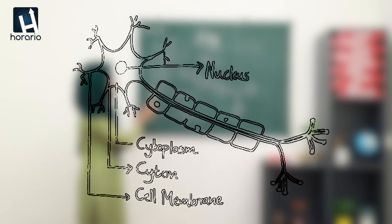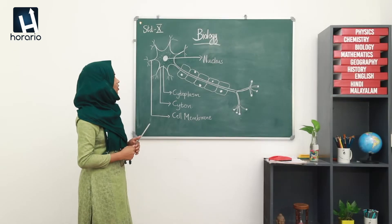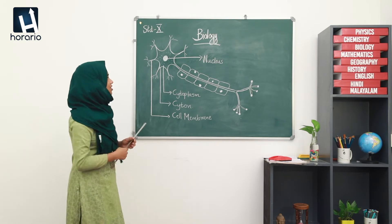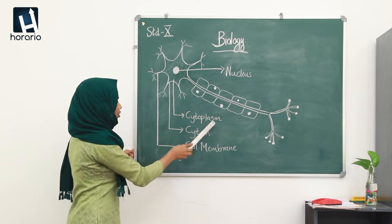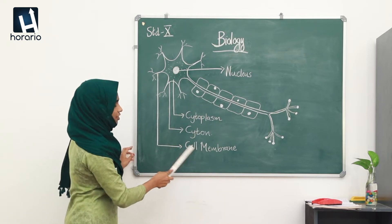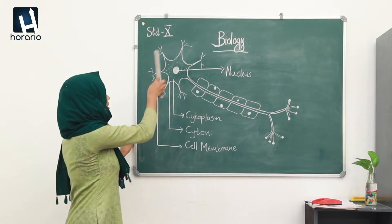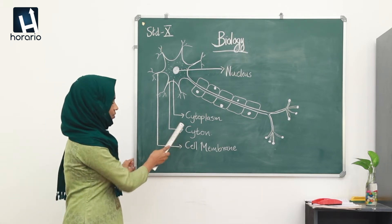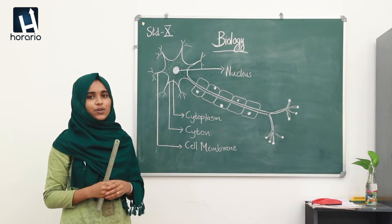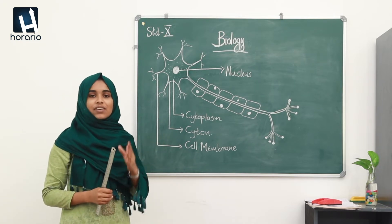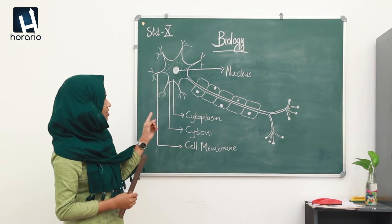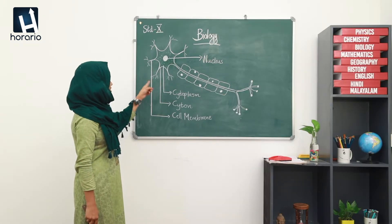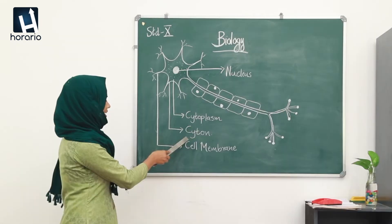Look at this figure. This is the structure of a neuron. We already discussed that a neuron has a structure similar to a typical cell — it consists of a well-defined nucleus, cytoplasm, and a cell membrane. The whole part which has this typical cell structure is known as the cytone. The cytone is the enlarged portion of the neuron.